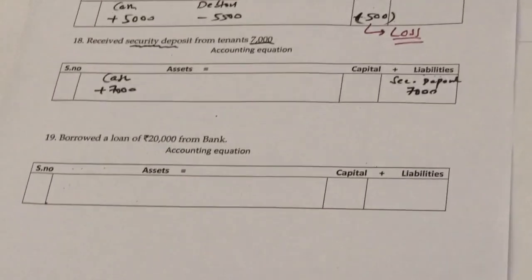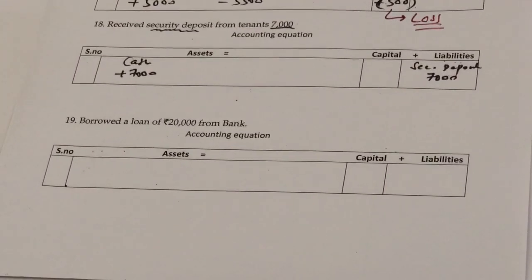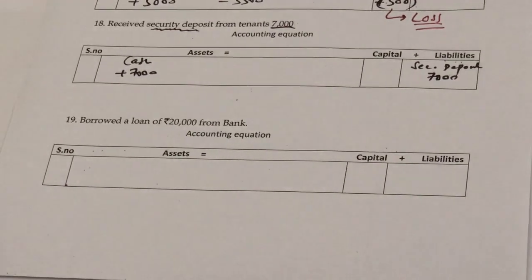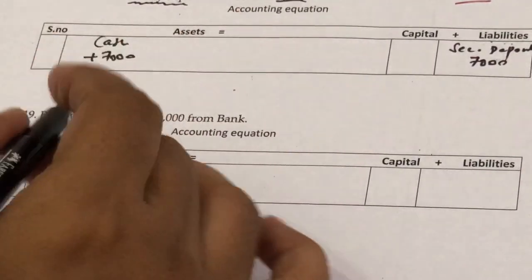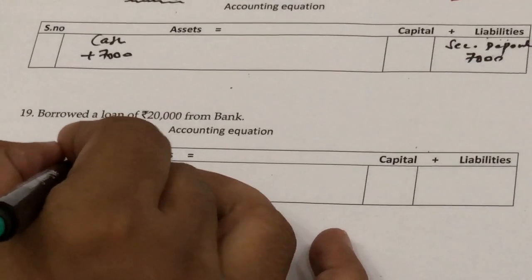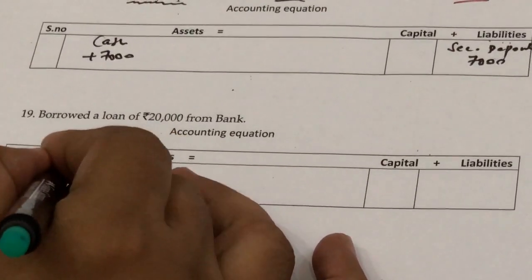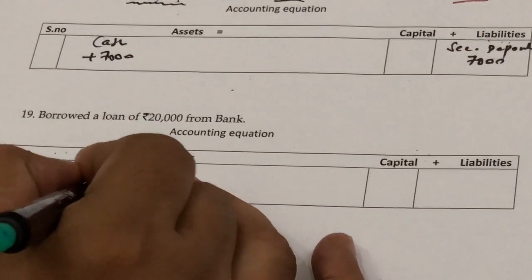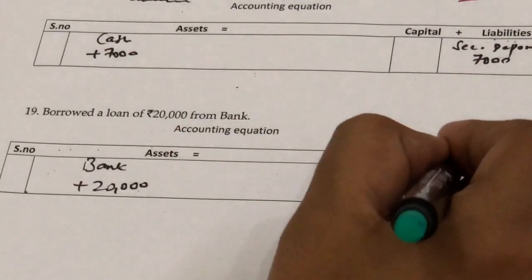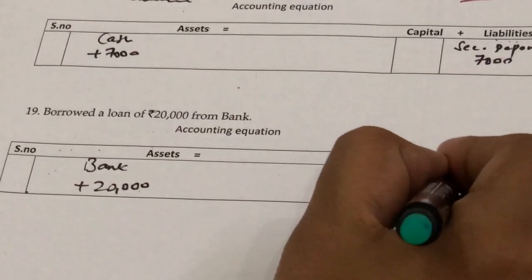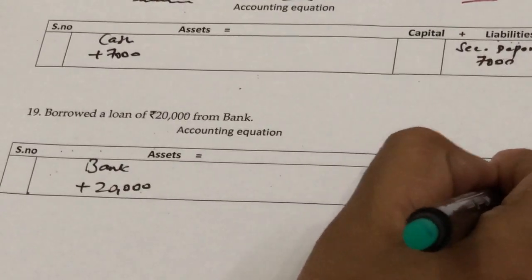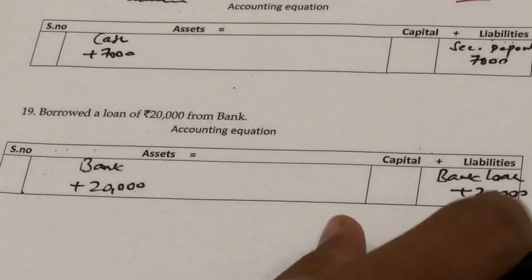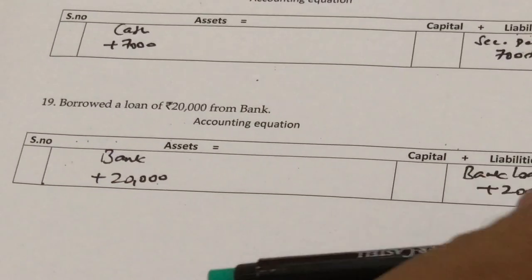Next transaction: borrowed loan from bank of 20,000. When we borrow money from the bank, the bank does not pay cash directly — it transfers the amount to our account. So we open a bank column and add 20,000 there, not in cash, and open a new column on the liability side for bank loan of 20,000.